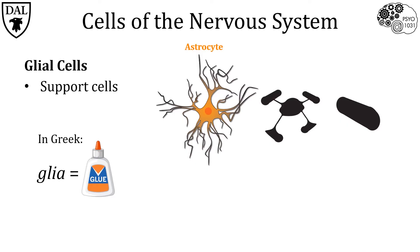One type called an astrocyte gets its name from its star-like appearance — astro is Latin for star. Astrocytes have widespread functions: they provide structural support, they are a source of glucose for neurons when they're hungry (and neurons are always hungry), and they regulate ions.